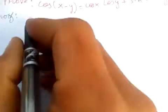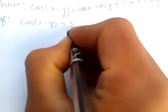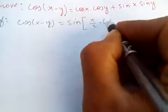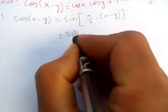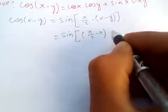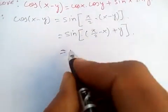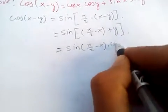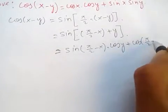We know cos(x - y) can be written in terms of sin as sin(π/2 - (x - y)). If we simplify further, this becomes sin(π/2 - x + y), and now we apply the identity sin(a + b) = sin(a)cos(b) + cos(a)sin(b).